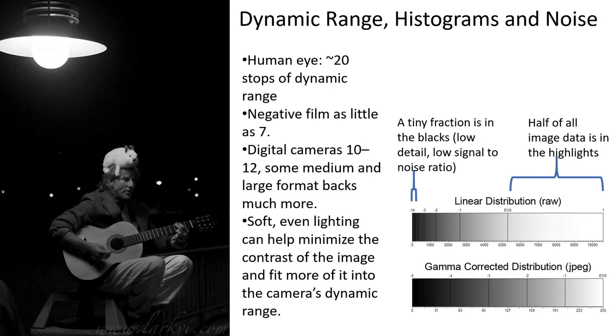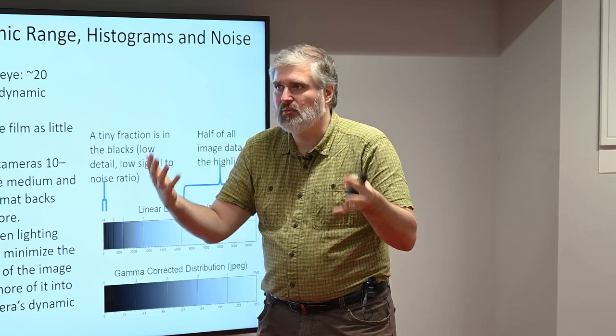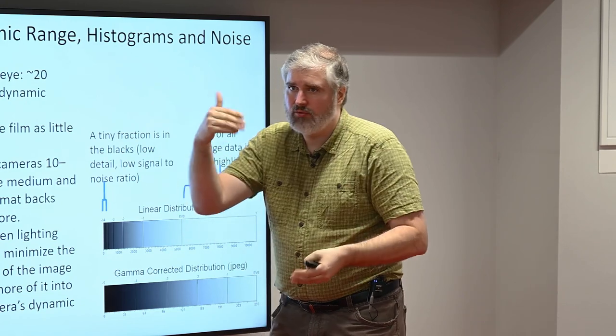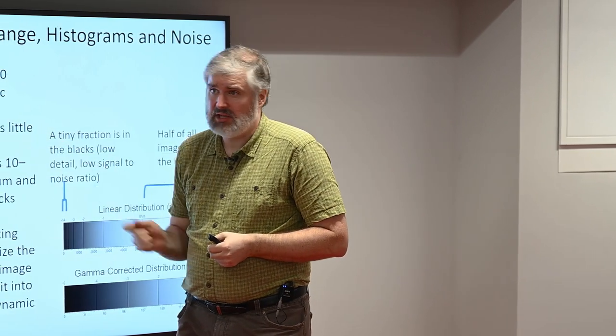Because our human eye sees about 20 stops of dynamic range, which is where we can, you know, change it on a camera. When you're pushing your button, you're changing how many stops up and down over my exposure range am I going.